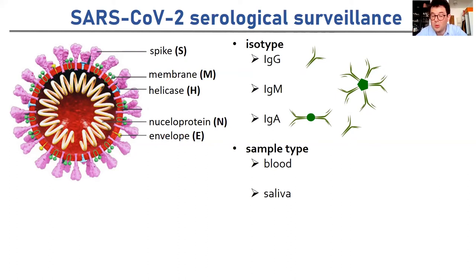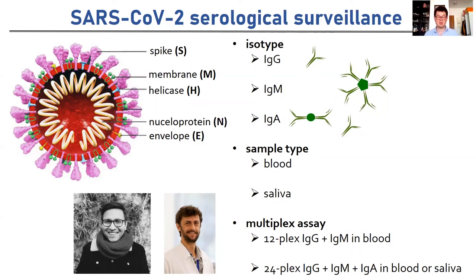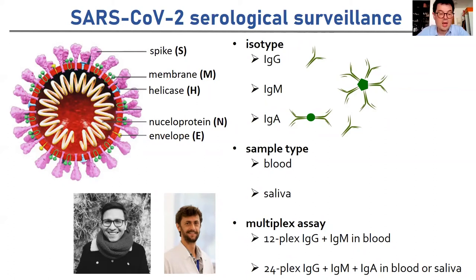You can also measure antibodies in stool, nasal swabs, and quite a lot of different fluids. The saliva application is particularly interesting because it's a much easier sample to take than blood. We can put all of this together to develop multiplex diagnostic assays. This work started with Jason Rosado, a PhD student who developed a 12-plex assay for measuring IgG and IgM in blood. This was then taken forward by Stéphane Pillot, a postdoc who developed a 24-plex assay for measuring IgG, IgM, and IgA in blood and saliva samples.